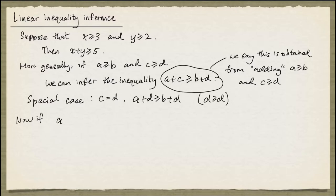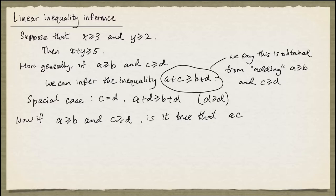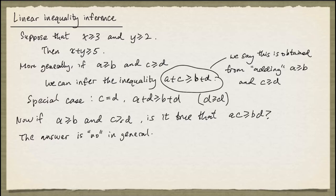Now if we have a greater than or equal to b and c greater than or equal to d, is it true that a times c is greater than or equal to b times d? In general, the answer is no. And to see this, we can just look at the following example. 3 is certainly greater than or equal to 1 and negative 1 is certainly greater than or equal to negative 2.